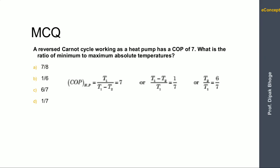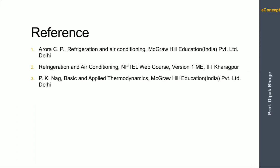MCQ: A reverse Carnot cycle working as a heat pump has a COP of 7. What is the ratio of minimum to maximum absolute temperature? We know COP of a heat pump = T1/(T1 minus T2) = 7, so (T1 minus T2)/T1 = 1/7. Separating: 1 minus T2/T1 = 1/7, therefore T2/T1 = 6/7. Option C is correct.